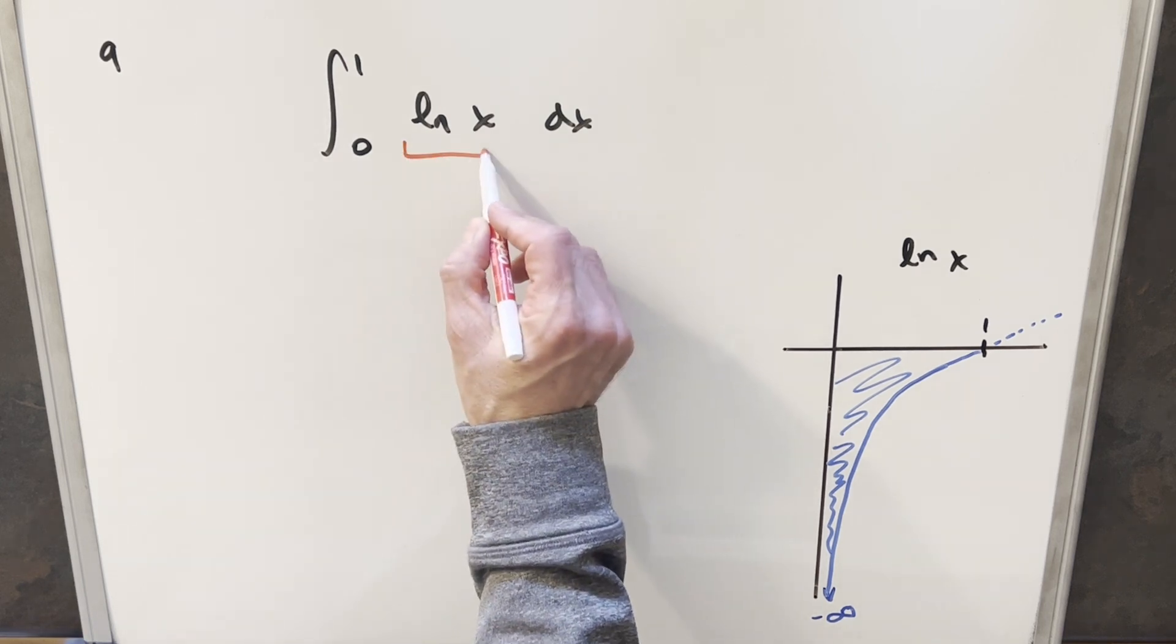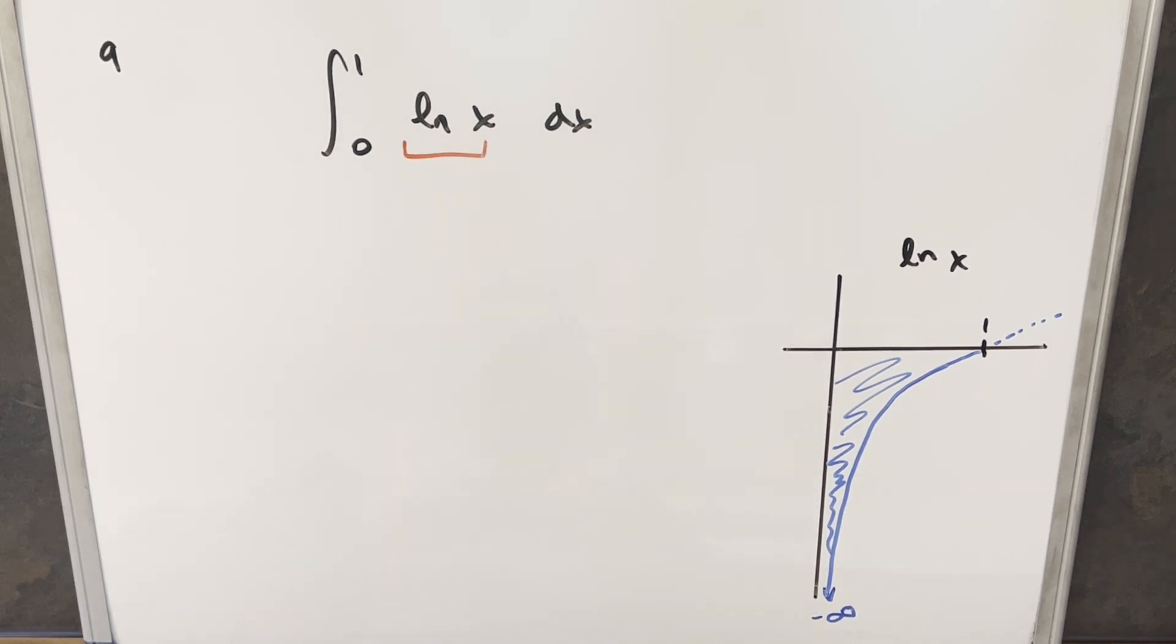This would be a very simple integral that we're used to dealing with, and we could just remember the formula for this, but the interesting thing is actually the graph. Looking at our graph of ln x between the bounds from zero to one, clearly this whole area is going to be negative, but notice around zero, this curve is going off to minus infinity. So it's not really clear looking at the graph what this area is going to be, or if this is even going to converge.